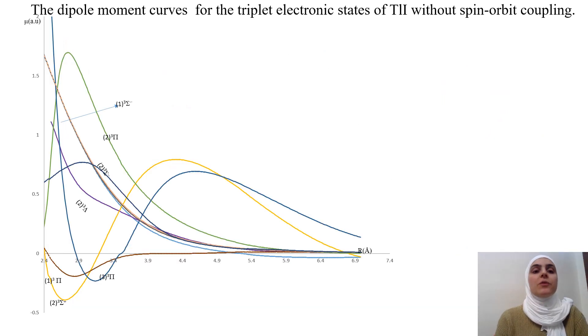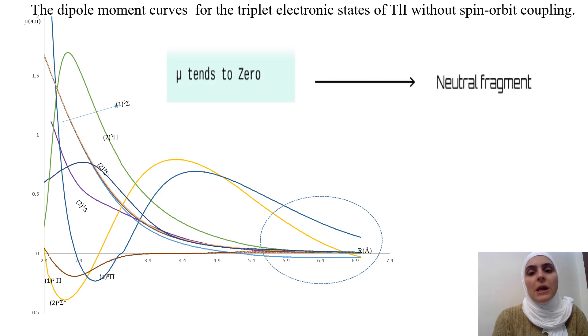This is another figure of the dipole moment curves for the triplet electronic state of TLI. Here we didn't consider the spin orbit coupling into consideration. We can also see how all the electronic states are going to zero. The dipole moment of the electronic state is going to zero. This means that at this internuclear distance, the fragments are being separated as neutral fragment and not ionic fragments.